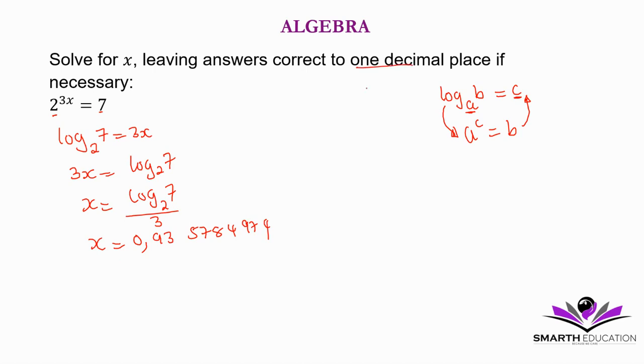But they said one decimal place, so we have to round off. Because this number is 3, that means x will become 0.9. 3 will not change the 9, it remains as it is. But if it was 2 decimal places, it was going to be 0.94. If 5, I was going to change the 3 and make it 4.